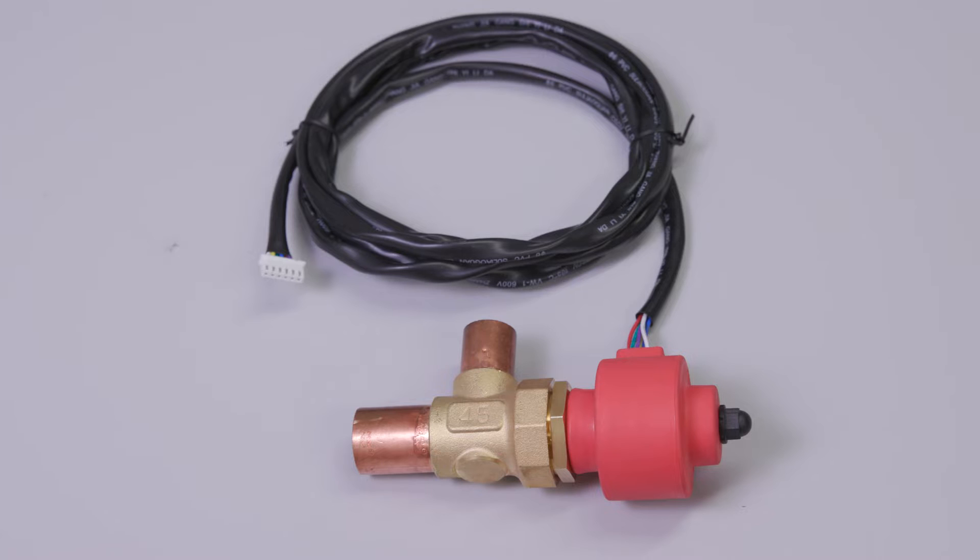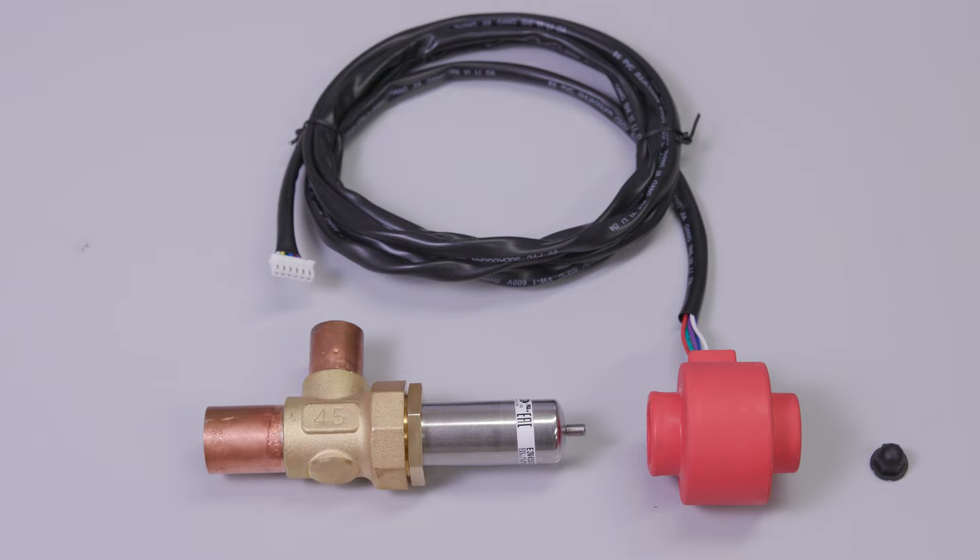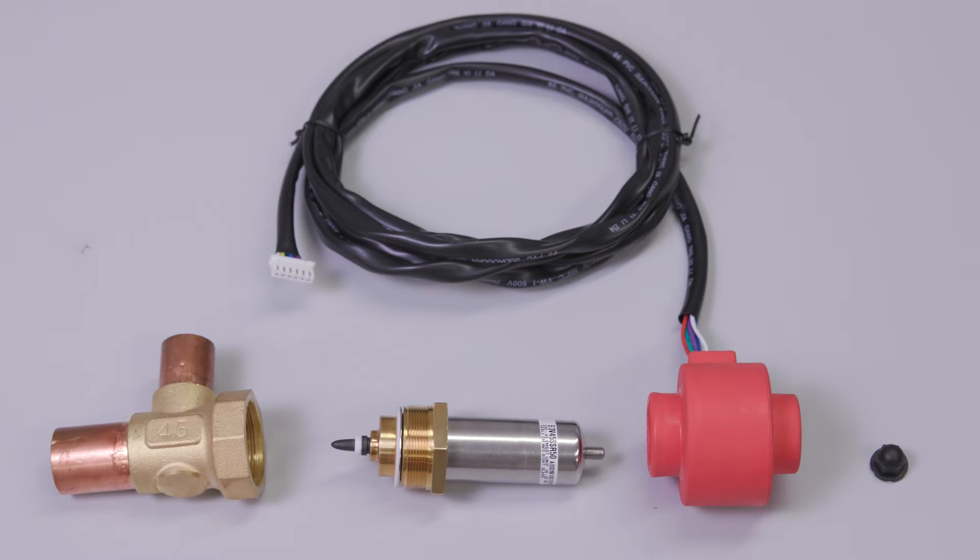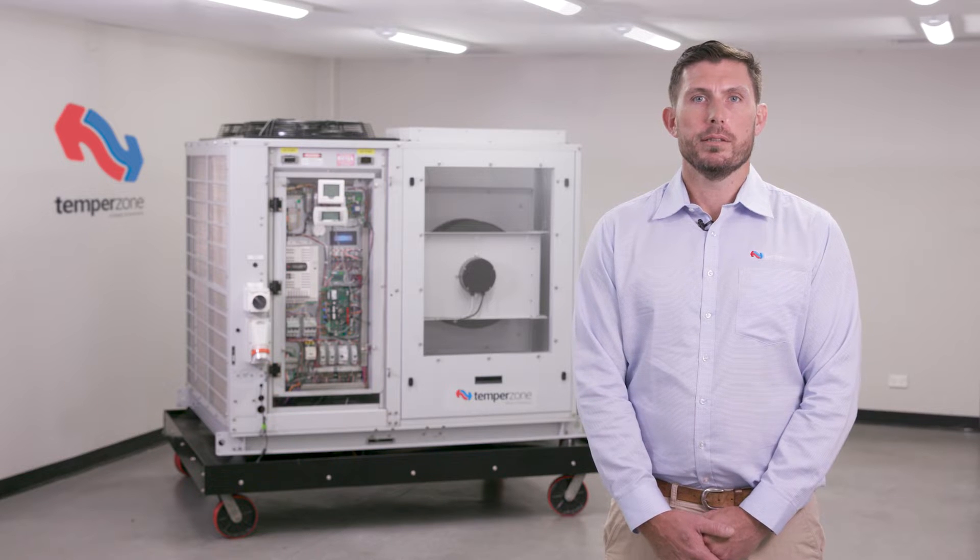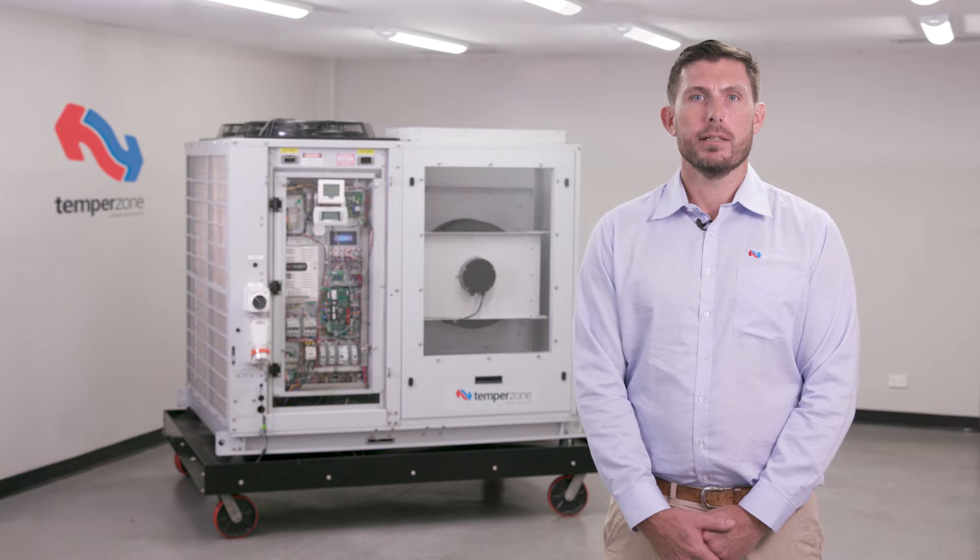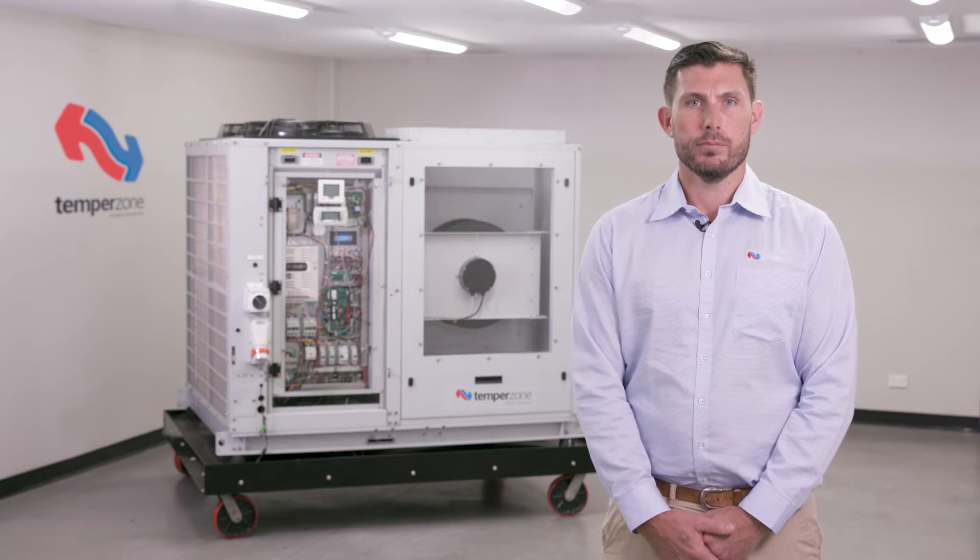Although an electronic expansion valve looks similar in appearance to a common solenoid valve, the method of operation is very different. Normal solenoid operation energizes a coil that electromagnetically opens and closes a plunger. Operation can either be 100% open or 0% open.